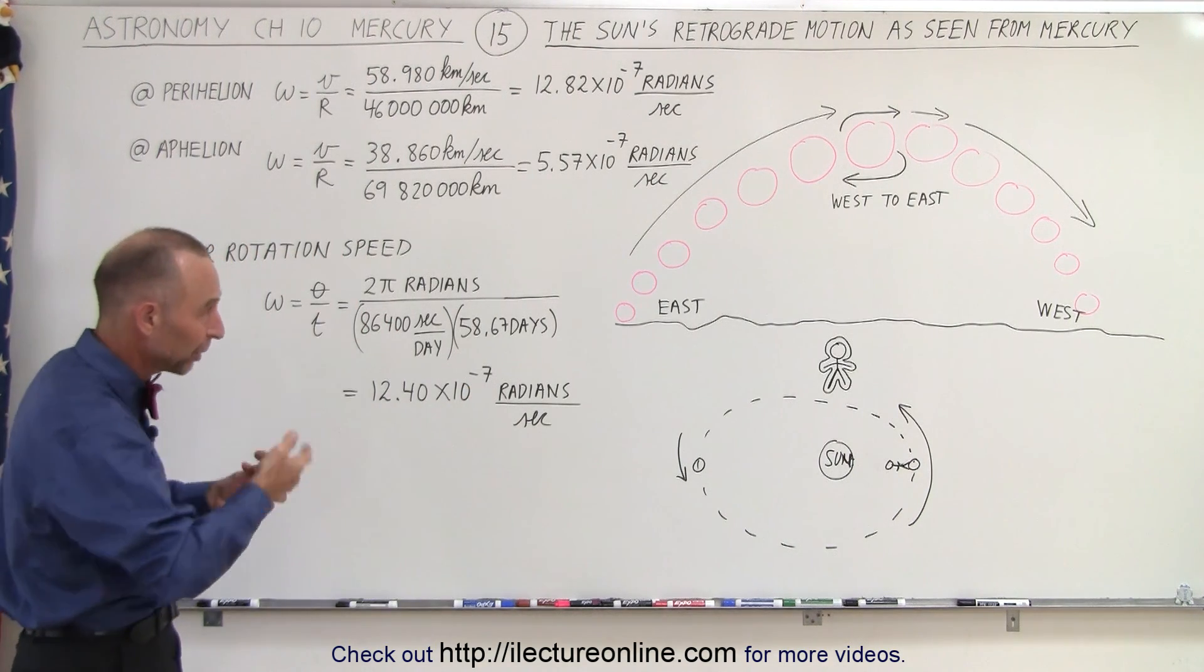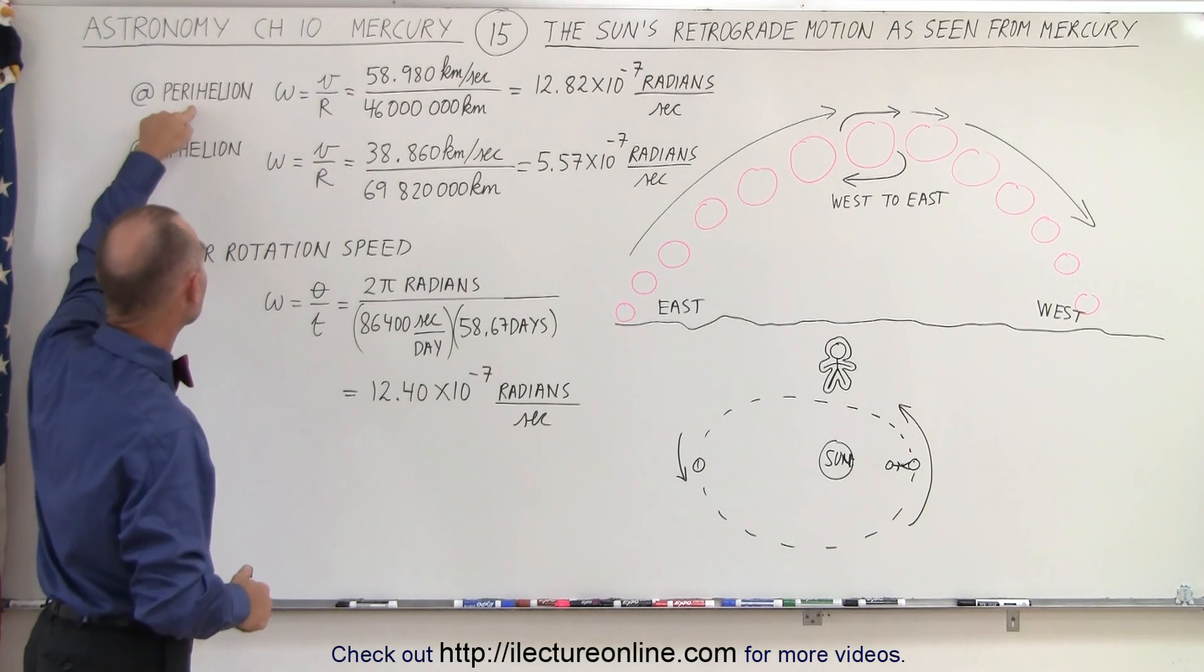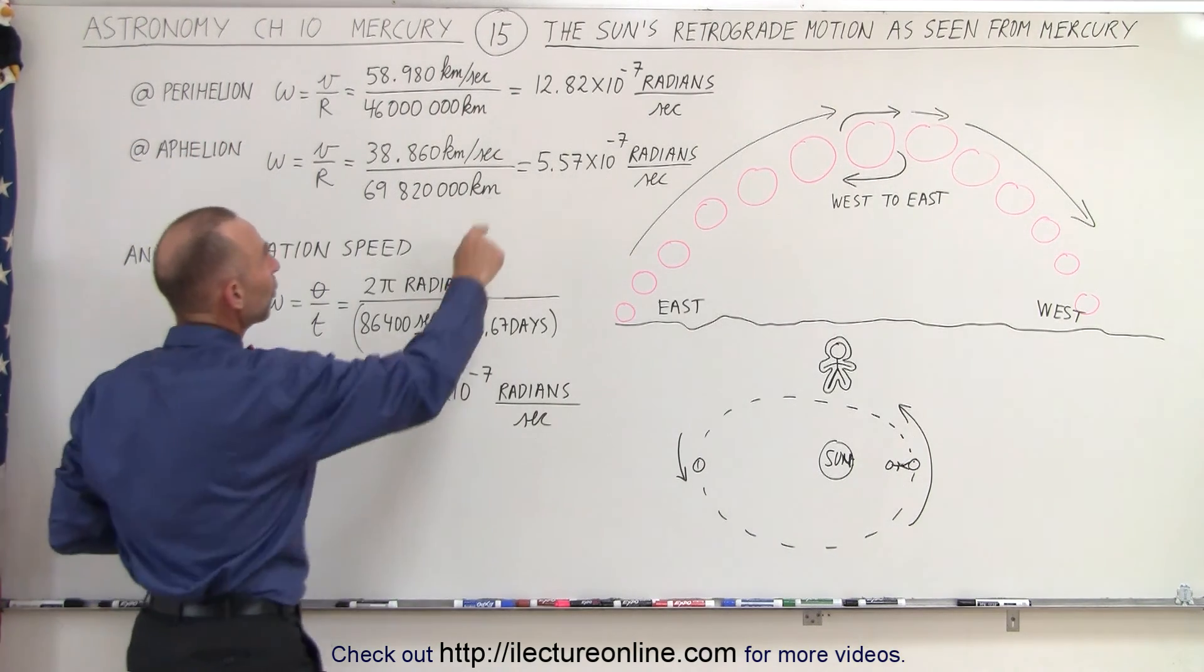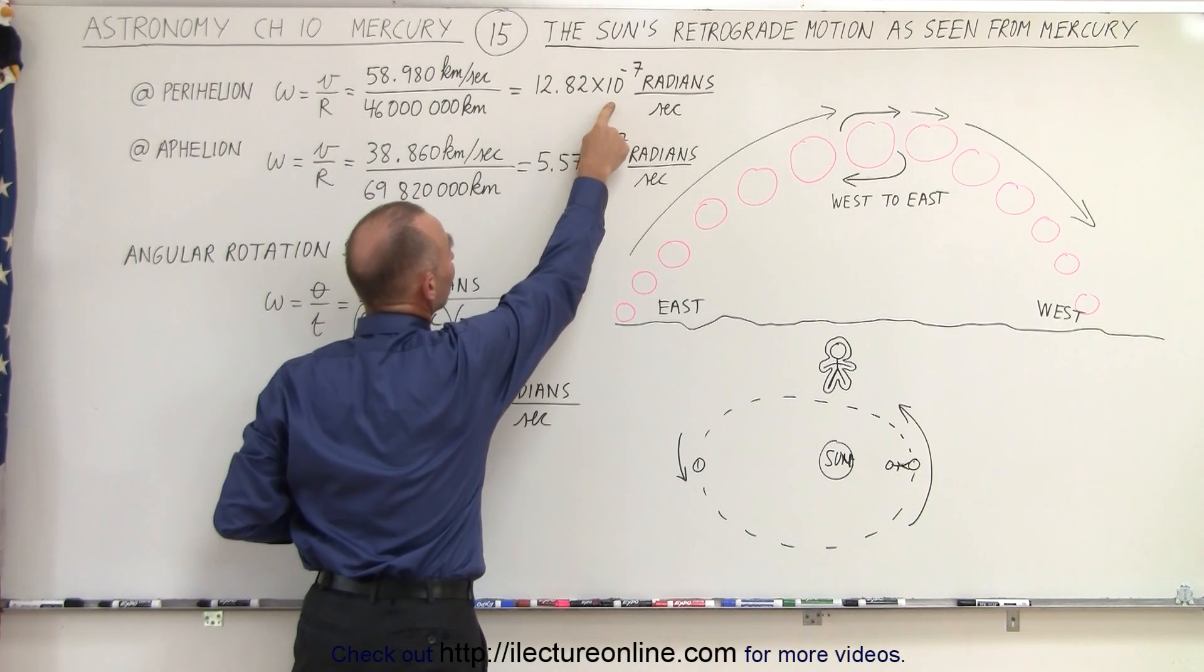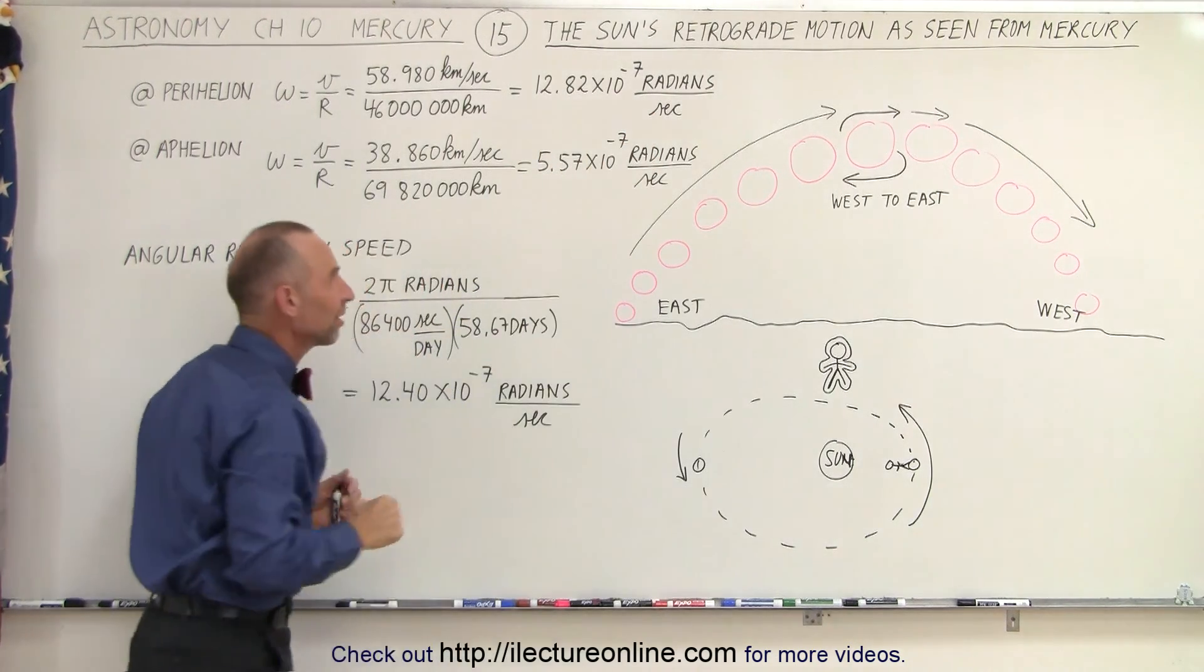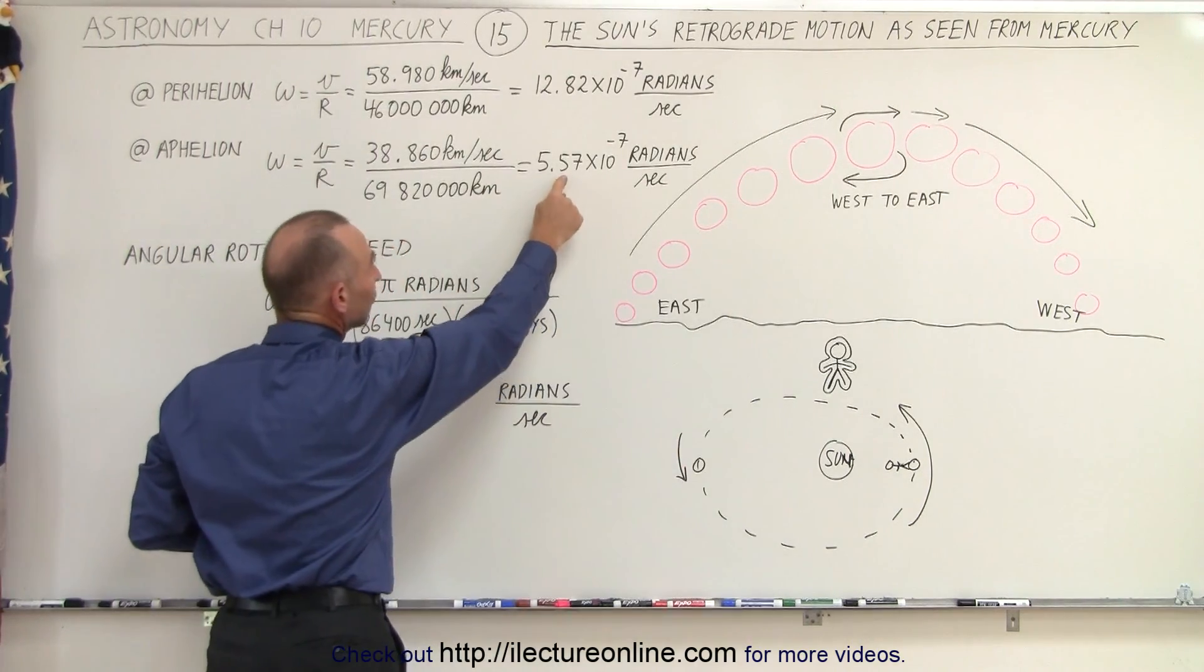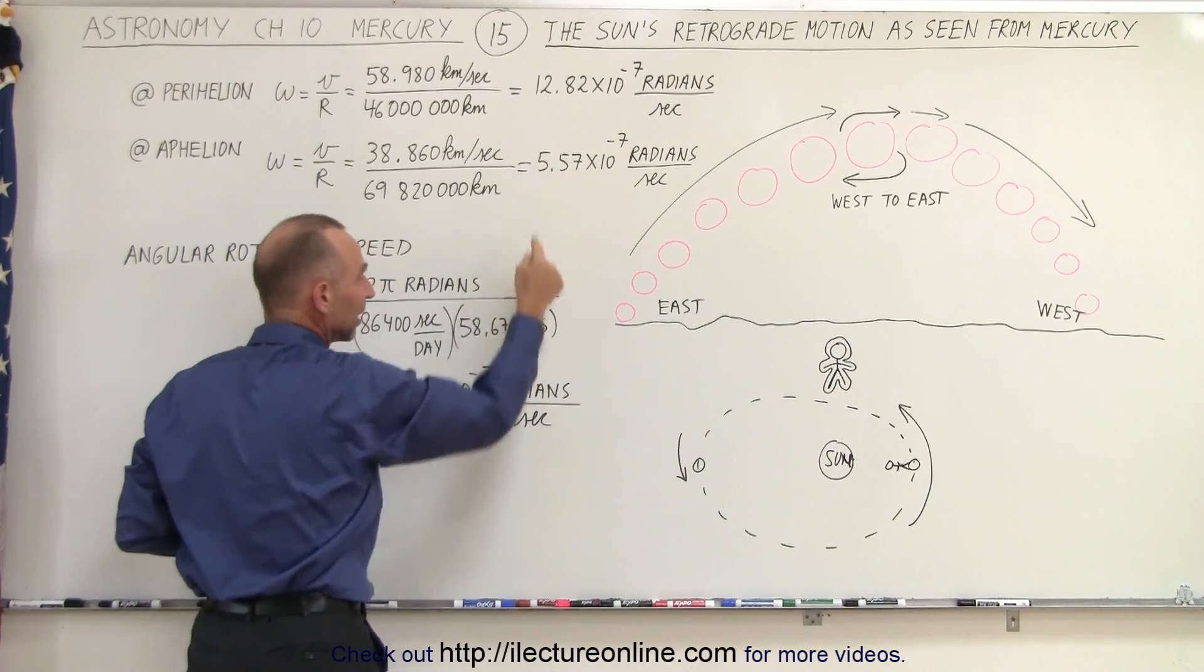The angular velocities at perihelion and at aphelion are 12.82 times 10 to the minus 7 radians and 5.57 times 10 to the minus 7 radians. Because of its slower velocity when it's at aphelion, it has a much slower angular velocity.